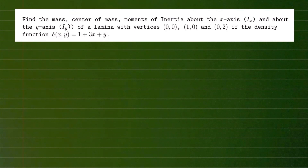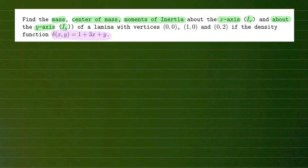Welcome everyone. In this video we're going to talk about the application of double integrals. For this particular example we're going to compute the mass, the center of mass, and the moment of inertia about the x-axis (denoted I sub x) and about the y-axis (denoted I sub y) of a lamina with vertices (0,0), (1,0), (0,2), given a specific density function. We're looking at a triangular region as our lamina — a very thin flat plate — and we want to figure out its center of mass.